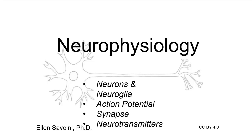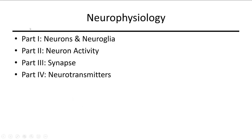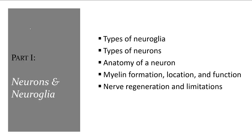Neurophysiology. There are four parts: neurons, neuroglia, neuron activity, a synapse from one neuron to another tissue, and neurotransmitters.